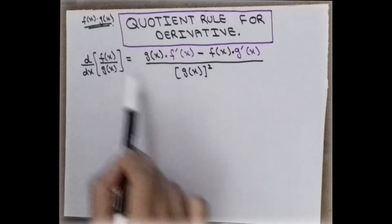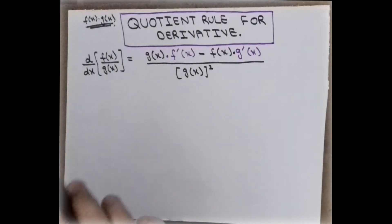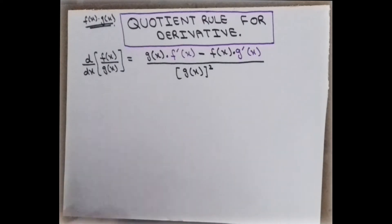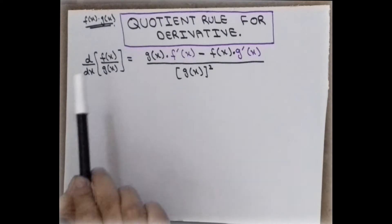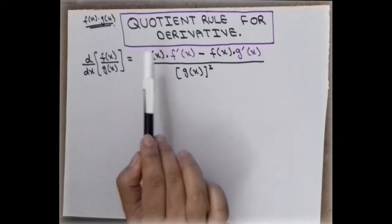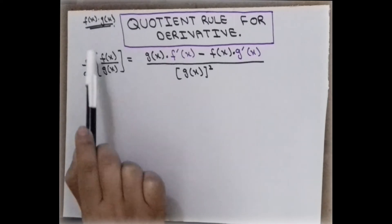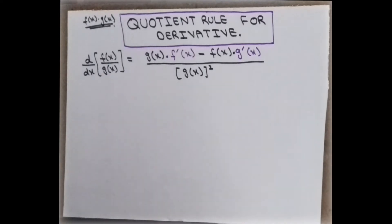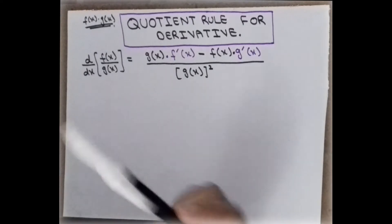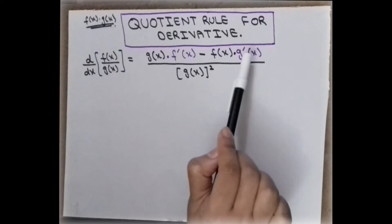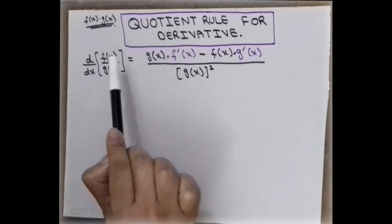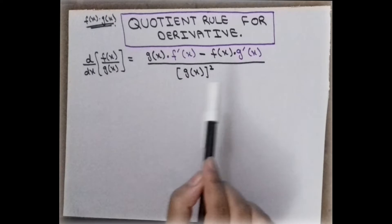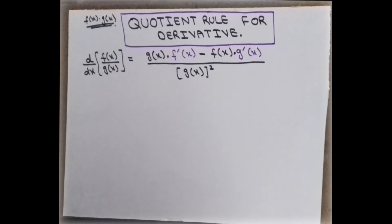It is very easy to apply the derivative on a quotient term using this formula. For an f over g form, the term in the denominator is written first and multiplied by the derivative of the upper term. The sign between them is minus. Then write the upper term multiplied by the derivative of the denominator term, and divide the whole expression by the square of the denominator.